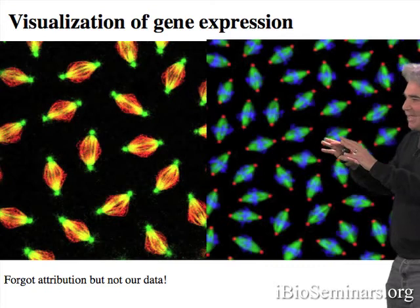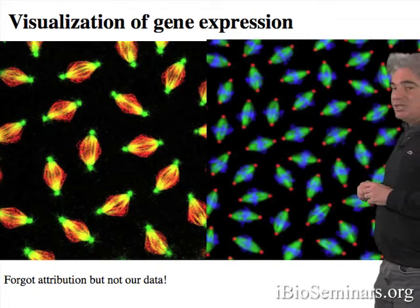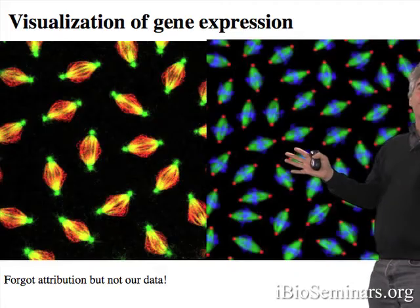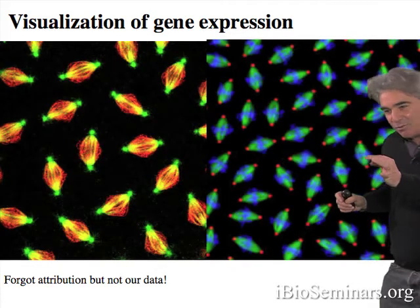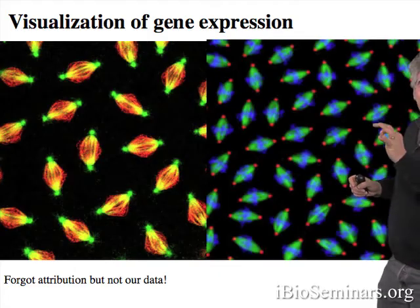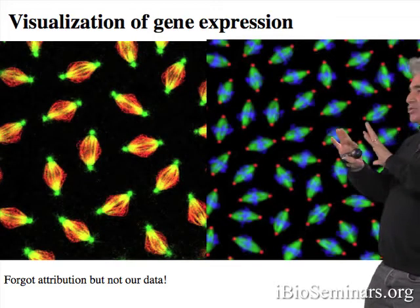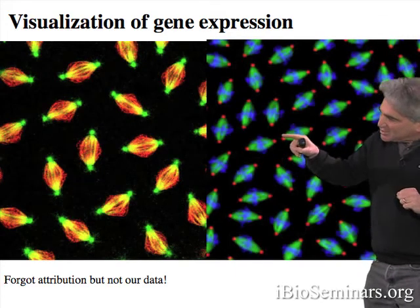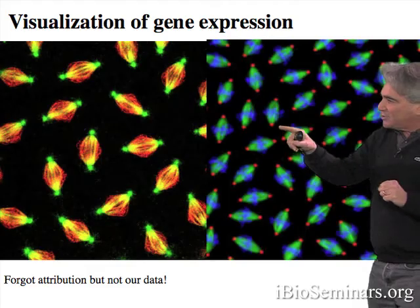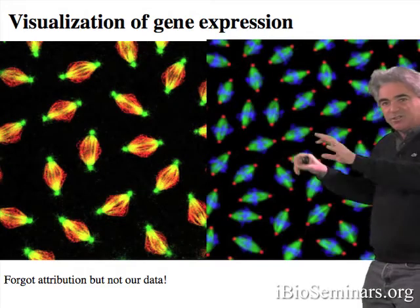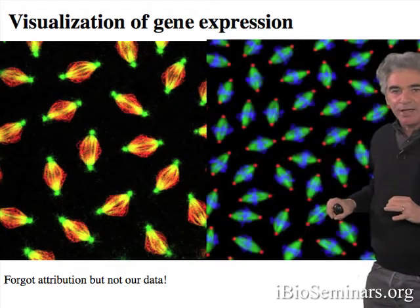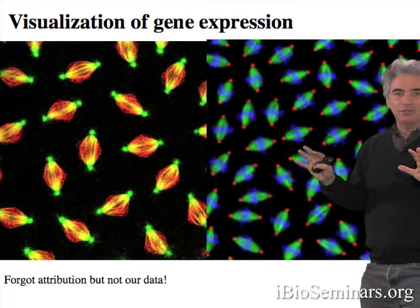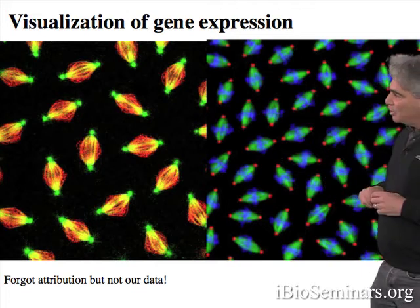This system is ideally suited for visualizing gene expression and development. First, the nuclei are at the periphery — there's no need to focus the objective of the microscope into the interior of the egg, because all the action is at the surface. Secondly, the system is naturally synchronous. All these mitoses are occurring synchronously; all the nuclei are at the same stage of the cell cycle. And this is a big advantage for studying gene regulation.